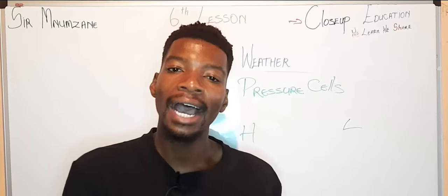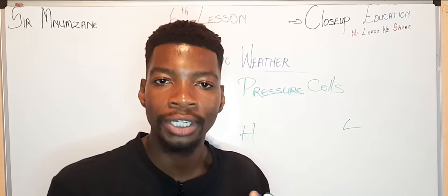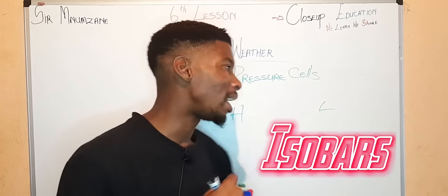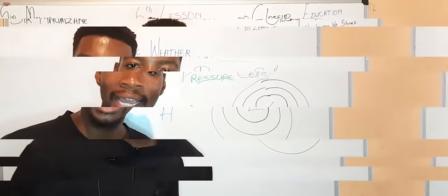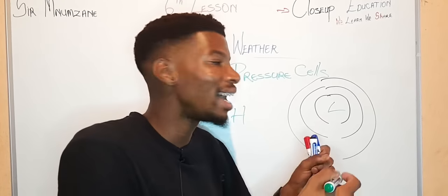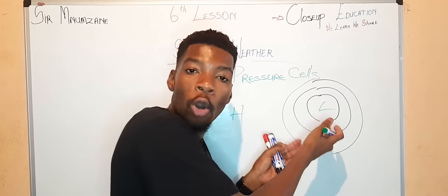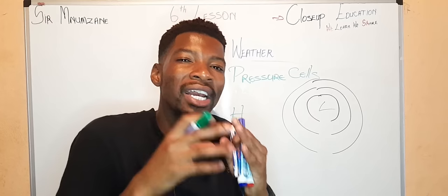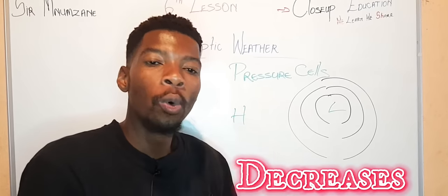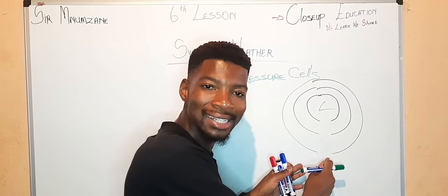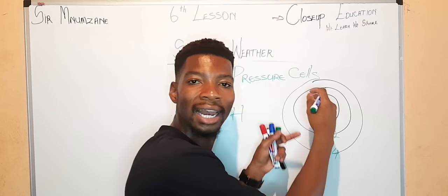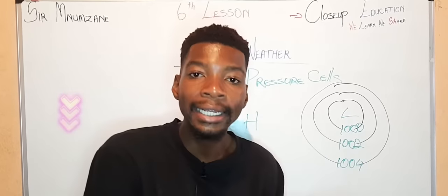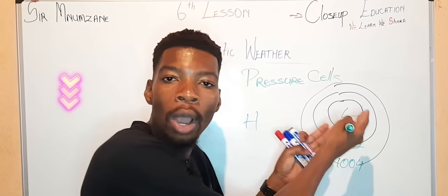These pressure cells have lines that join places of equal atmospheric pressure. Those lines are called isopars. These are the lines that join places of equal atmospheric pressure. Atmospheric intervals or numbers that are written within the isopar. So in a low pressure, those numbers or the atmospheric pressure reading decreases towards the center. So if this last isopar was 1,004, the second one will be 1,002 and the last one will be 1,000. The atmospheric pressure reading decreases towards the center on a low pressure cell.